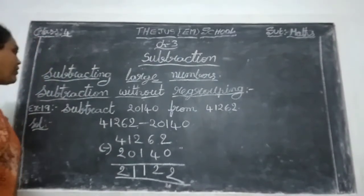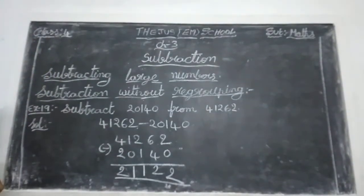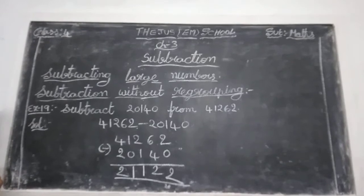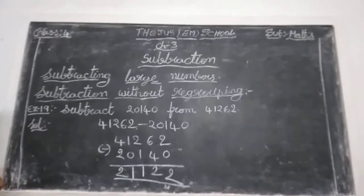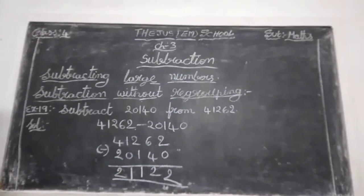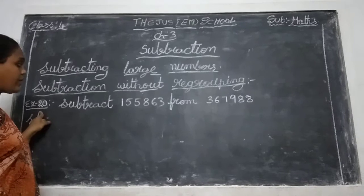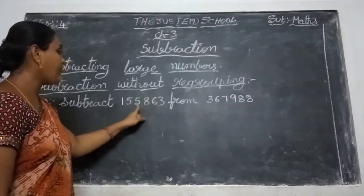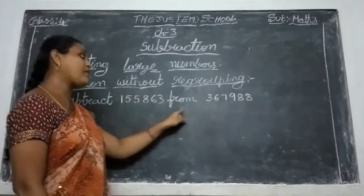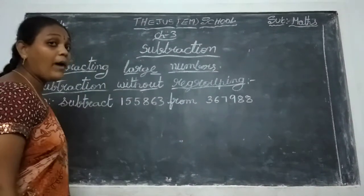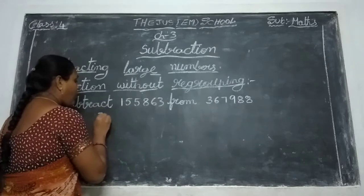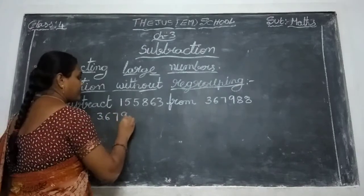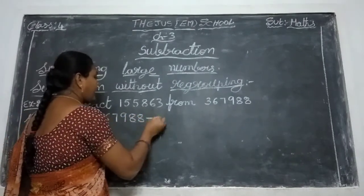Note in your notebooks without mistakes. See the next example 20. Subtract — given a 6-digit number. From the 'from' number we write first. Minus. Write the first number we do in order.